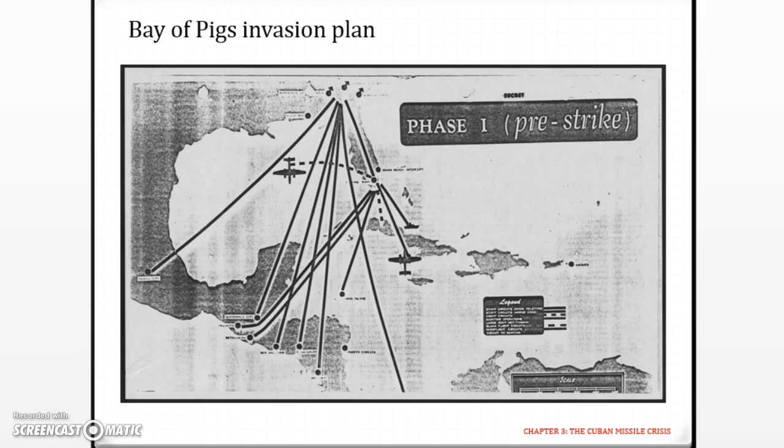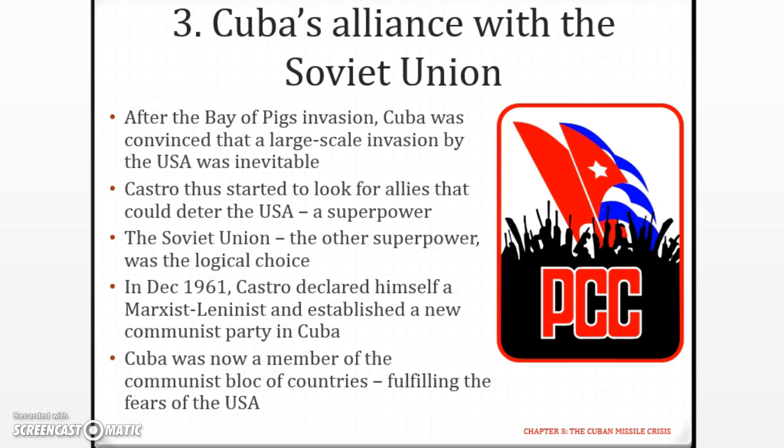This is part of the plans of the Bay of Pigs invasion, as you can see here. After the Bay of Pigs invasion, Cuba was convinced that the United States would eventually try to invade them a second time, so Castro needed somebody to protect them. This sets the stage for the Cuban Missile Crisis. In December 1961, Castro declared himself a Marxist-Leninist — basically a communist — and established a new communist party in Cuba. Cuba was now a member of the communist bloc, fulfilling the fears of the USA, and you can see how the USA-Cuba relationship eventually became embroiled in the Cold War.